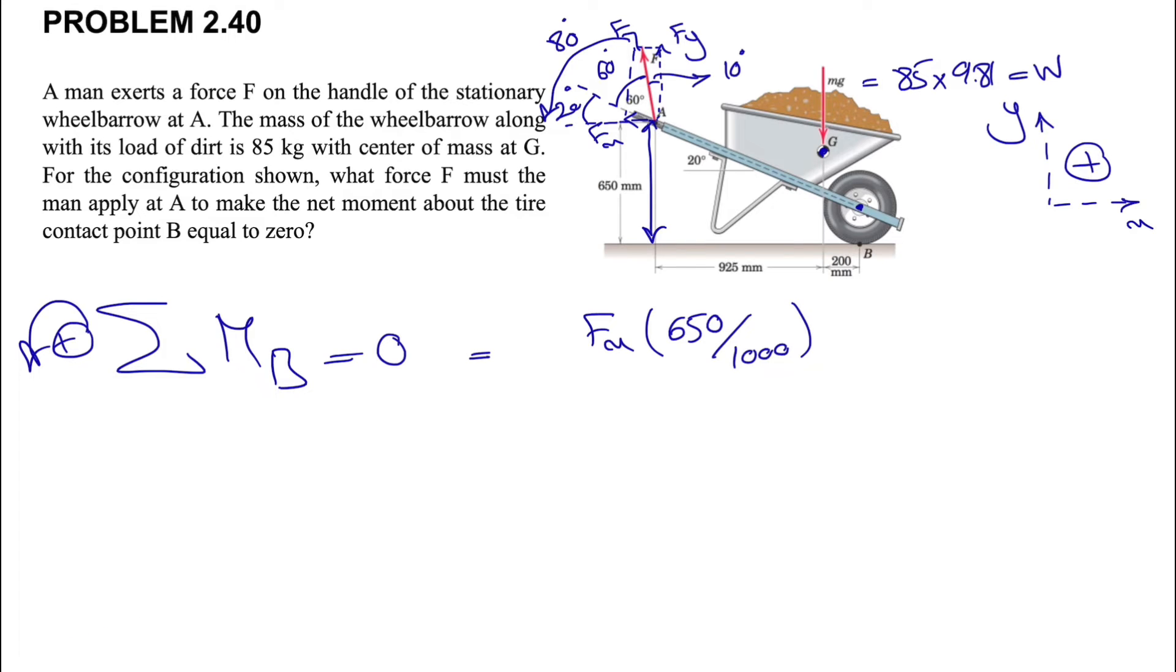We'll have Fx times the distance, which will be this distance I'm showing here, which is 650. Since everything is in millimeters, we're going to divide it by a thousand to find it in meters. Then at the end we can get the force in newtons.